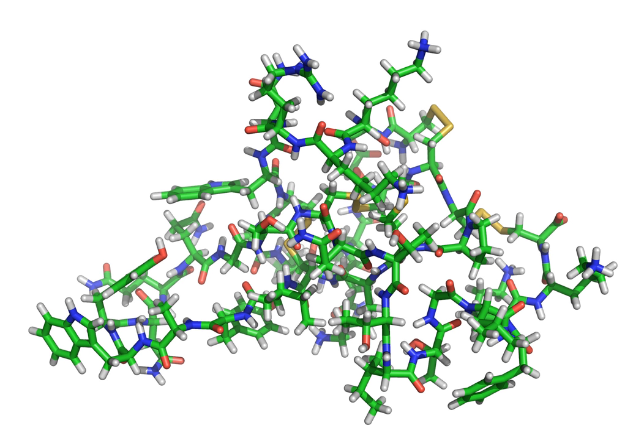However, the 22-28 loop contains one apolar residue, ALA-23, and three aromatics, TYR-22, TRP-24, and TYR-25, and is flanked by ILE-21 at its N-terminus and TRP-7 near its C-terminus, so this region represents a significant non-polar surface on the molecule.